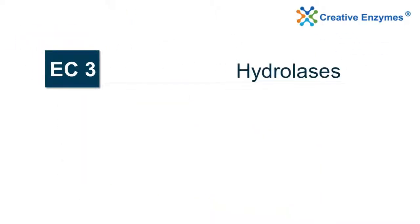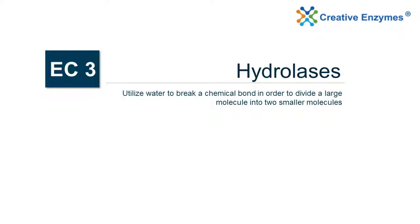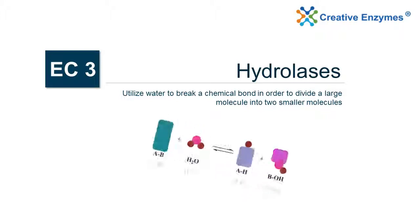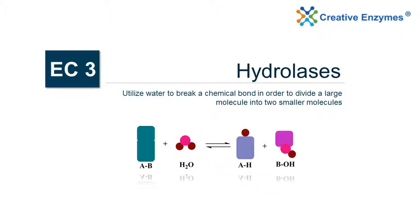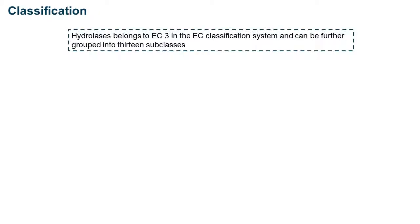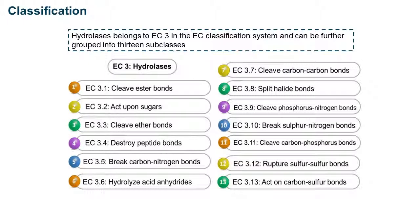EC3 — Hydrolases. Hydrolases utilize water to break a chemical bond in order to divide a large molecule into two smaller molecules. The reaction is shown below. Hydrolases belong to EC3 in the EC classification system and can be further grouped into 13 subclasses.